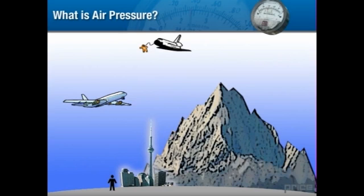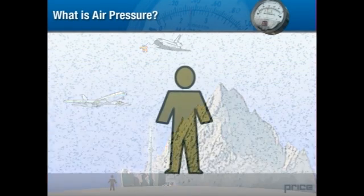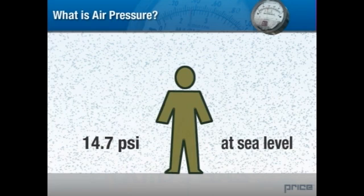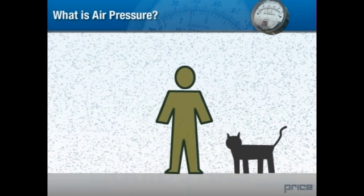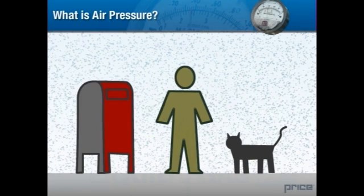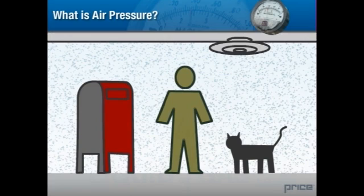This gaseous sphere surrounding the earth has a pressure of about 14.7 pounds per square inch at sea level. We don't feel it, however, because our body's internal pressure equals the pressure exerted by the atmosphere. Every object on earth is affected in this way by atmospheric pressure, including HVAC systems.